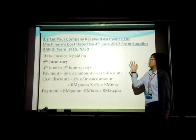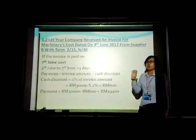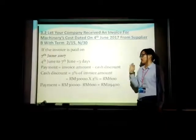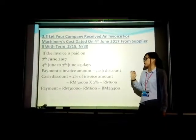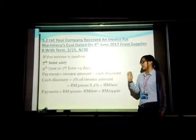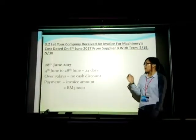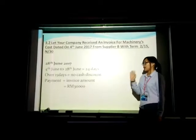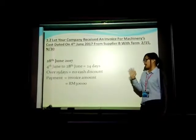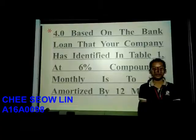Our company received an invoice for machinery cost on 4th of June from Supplier B with terms of 2% discount within 15 days, after which there is no discount. If the invoice is paid on 7th of June, that is 3 days from invoice date. Payment equals invoice amount minus cash discount. Discount equals 2% of RM30,000 equals RM600. Payment equals RM30,000 minus RM600, equal to RM29,400. If payment is made on 28th of June, that is 24 days from the invoice, which is over 15 days, so there is no cash discount. Payment equals RM30,000.